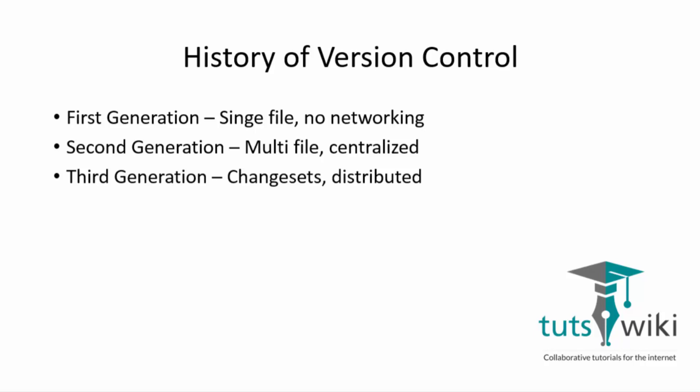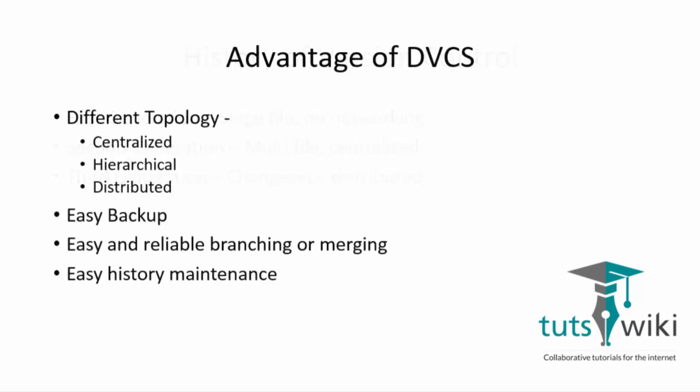There are various advantages of DVCS. You can use different topologies: centralized, where developers push their changes to one central repository; hierarchical, where developers push their changes to a sub-repository and then these changes are pushed to the main repository periodically; or distributed topology, where developers push their changes to their own repository and then project maintainers pull changes to the official repository. Other advantages of DVCS include easy backup, easy and reliable branching or merging, and easy history maintenance.